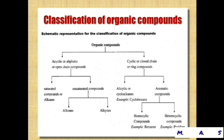And the second class is aromatic compounds. Aromatic compounds are further classified as homocyclic compounds — example, benzene — and heterocyclic compounds — example, pyridine.